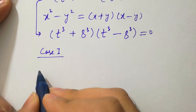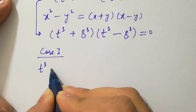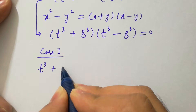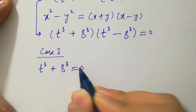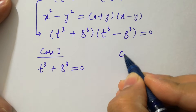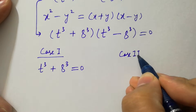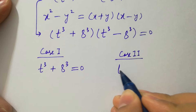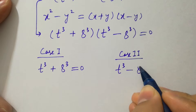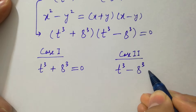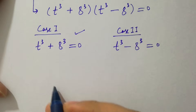We have two cases here. Case one: t³ + 8³ = 0. Case two: t³ − 8³ = 0. First of all, let's solve case one.